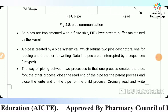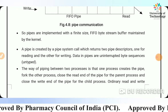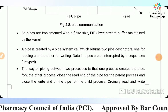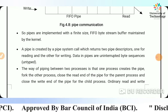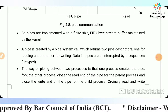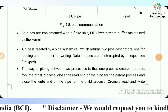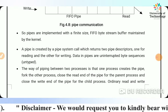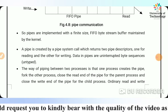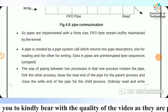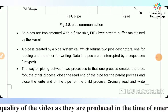The way of piping between two processes is that one process creates the pipe, the other process closes the read end of the pipe for the parent process, and closes the write end of the pipe for the child process. Ordinary read and write operations are used for one-way data flow through the pipe. A pipe exists only for the time period when both reader and writer processes are active.